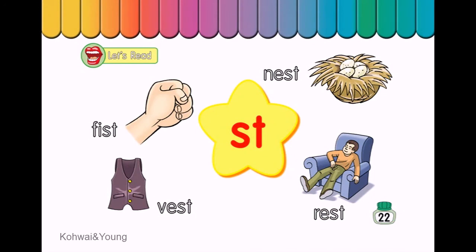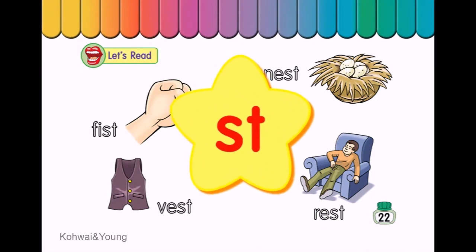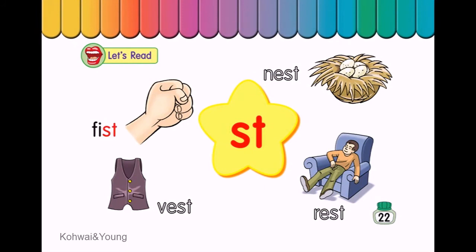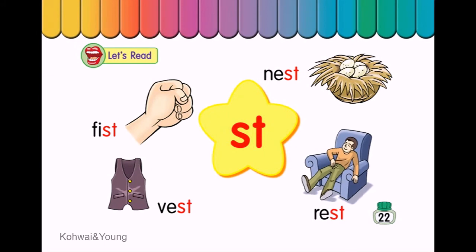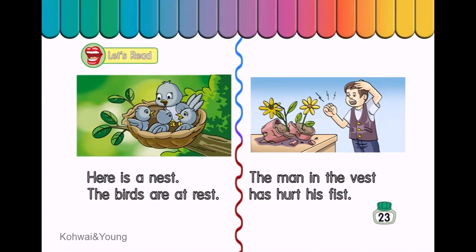Let's read. Fist. Nest. Rest. Let's read. Here is a nest. The birds are at rest. The man in the vest has hurt his fist.